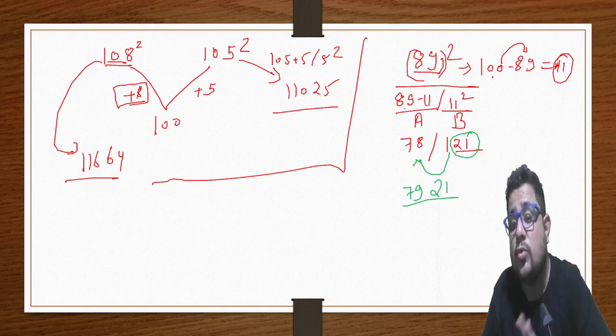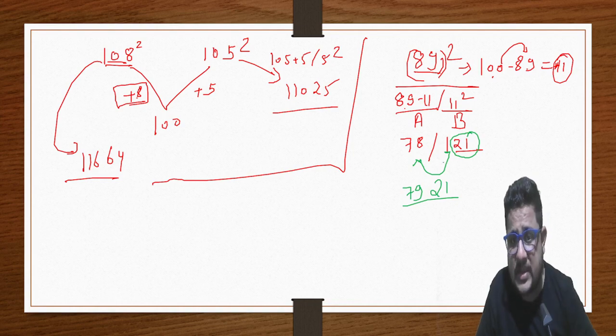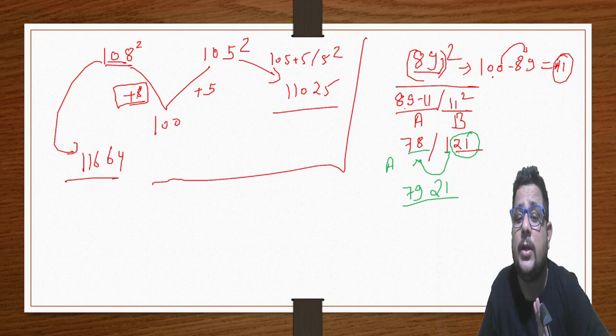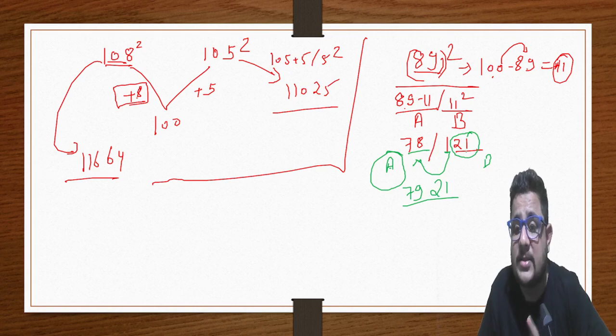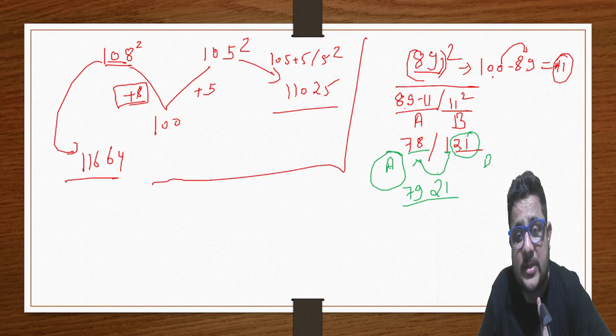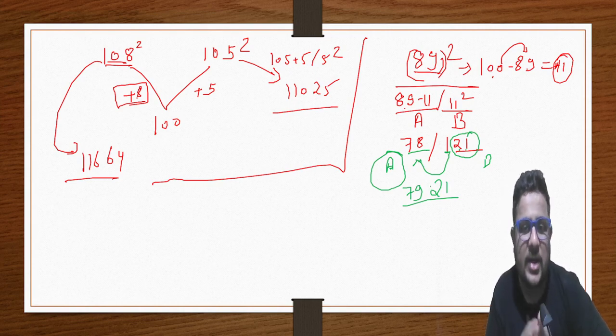Write 11 squared next to it. Part A is where we do addition or subtraction. Part B is where we square the difference. Subtract 11 from 89, giving 78. But when I write 11 squared, that's 121. And I told you that you have to write only the last 2 digits. So last 2 digits are 21. Now add this 1 to 78, giving 7921. The last 2 digits stay, and the extra part shifts to part A.